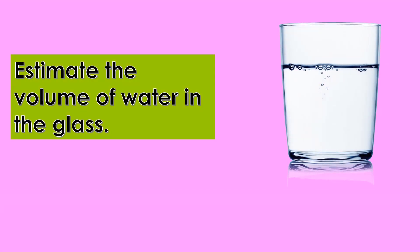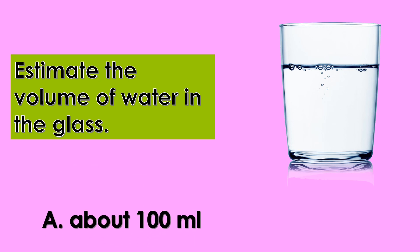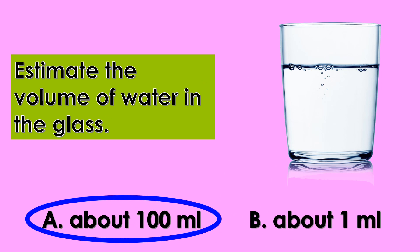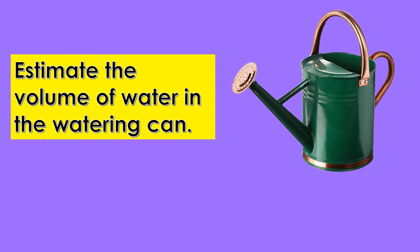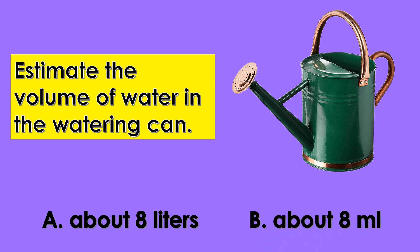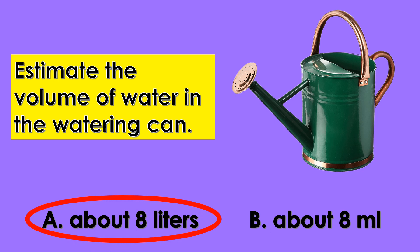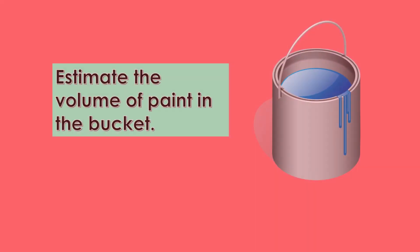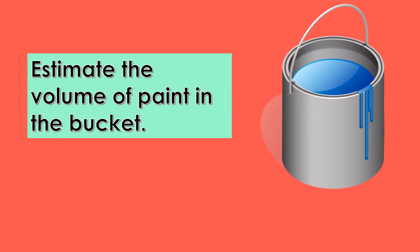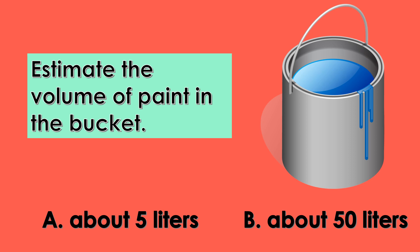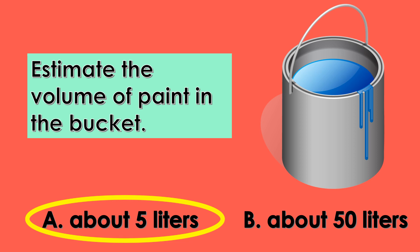Estimate the volume of water in the glass. A. About 100 milliliters. B. About 1 milliliter. You are good! It's about 100 milliliters. Estimate the volume of water in the watering can. A. About 8 liters. B. About 8 milliliters. Correct! It's about 8 liters. Estimate the volume of paint in the bucket. A. About 5 liters. B. About 50 liters. Good job! It's about 5 liters.